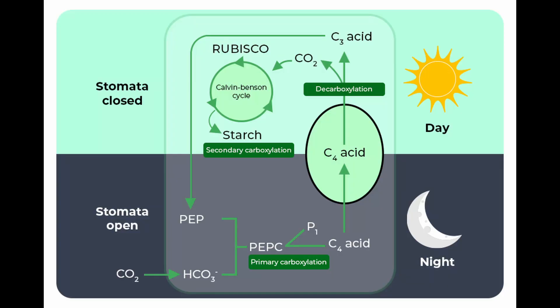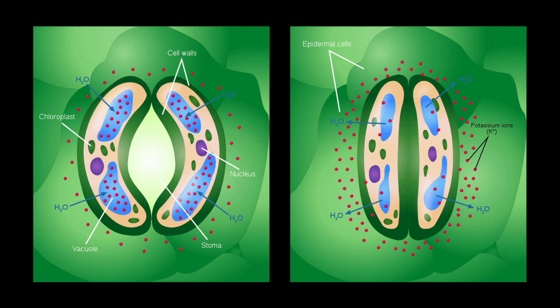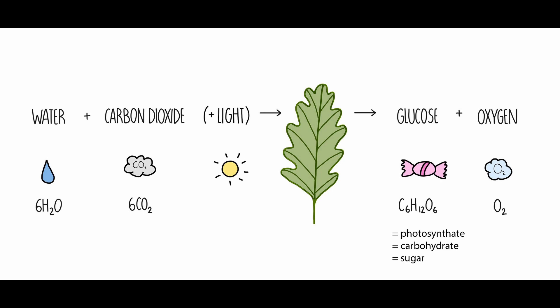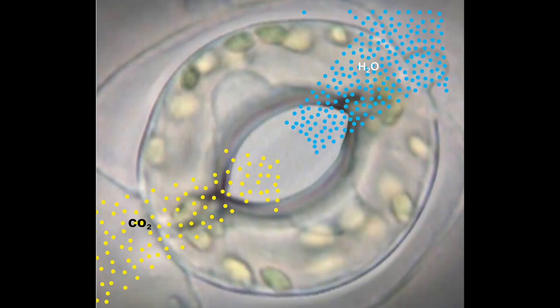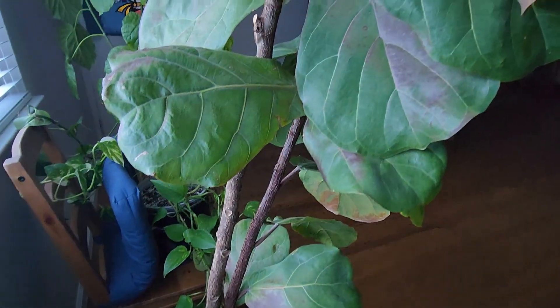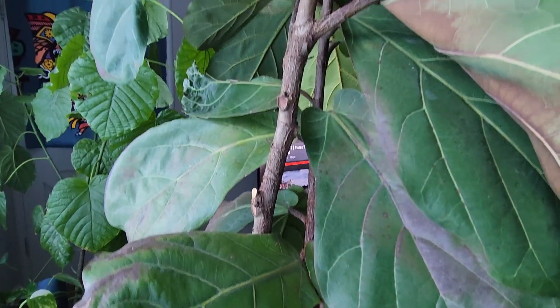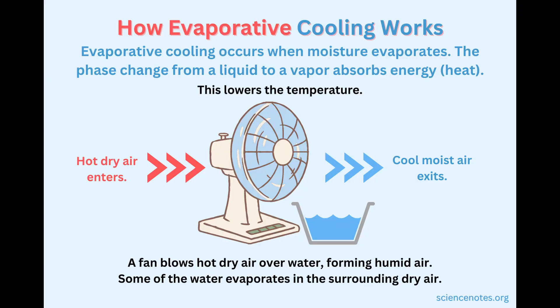Some plants change their photosynthesis so that part of it happens during the day, but the stomata open to bring in carbon dioxide at night instead. You might wonder why plants don't just keep their stomata closed during the day — but photosynthesis requires light and carbon dioxide, so the stomata must open. Having water loss also benefits the plant by keeping leaves cool through evaporative cooling; if stomata stay closed, the leaf could overheat and become sunburned. This is the same principle by which swamp coolers work.